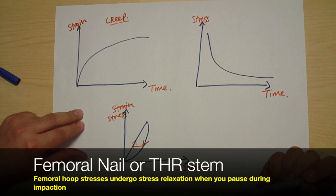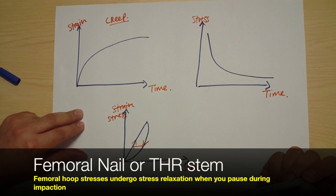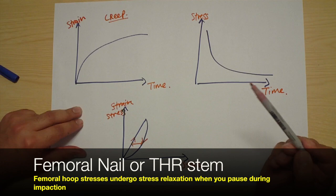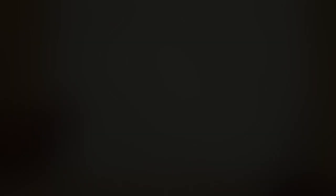In terms of stress relaxation, when you're inserting a femoral nail into a femur, the bone will undergo stress relaxation, which will allow you to then proceed further with the nailing.